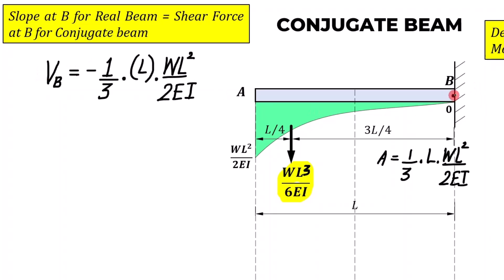At B we are considering the left portion. If we are considering the left portion, downward is negative and upward is positive. That's why you took a negative sign; this load is acting in the downward direction. The answer would be, or slope for the real beam, would be minus wL cubed upon 6EI. So please note: whatever calculation of shear force you do for the conjugate beam qualifies as the slope for the real beam.